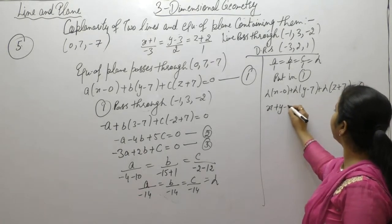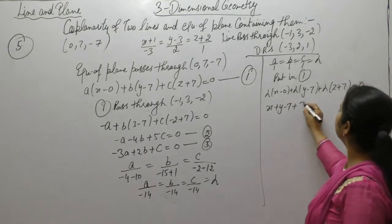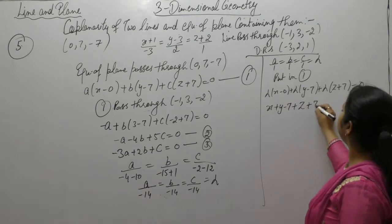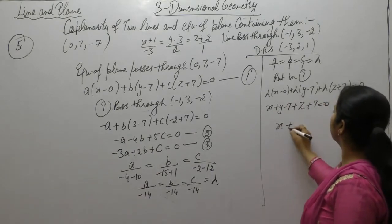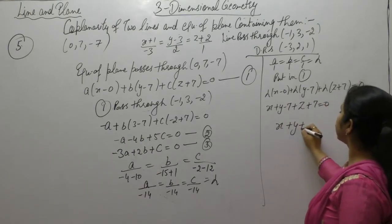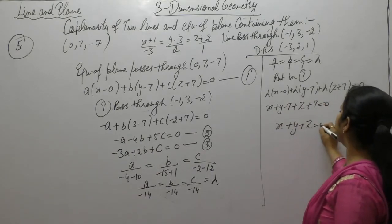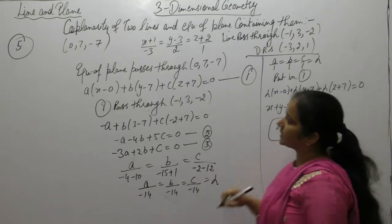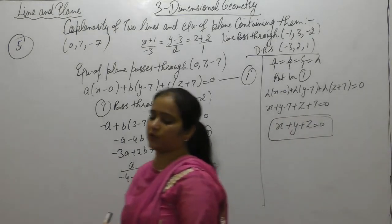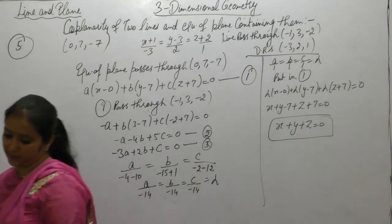After eliminating lambda by taking it common: x plus y minus 7 plus z plus 7 equals to 0. So x plus y plus z equals to 0 is the required equation of the plane.